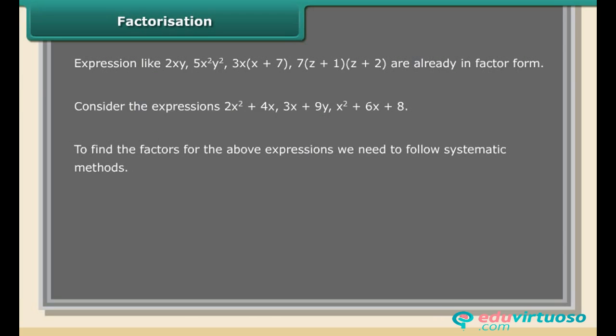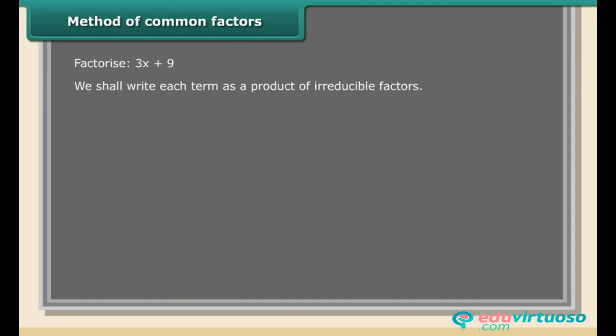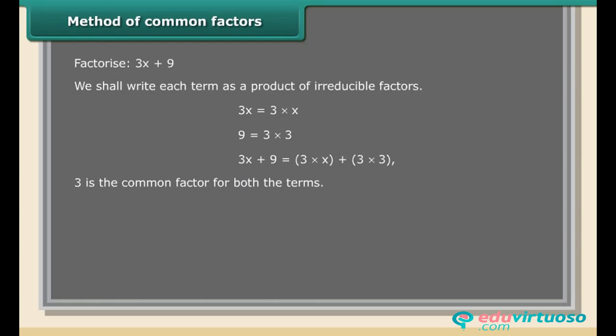To find the factors for expressions such as 2x² + 4x, 3x + 9y, and x² + 6x + 8, we need to follow systematic methods. Method of common factors: factorize 3x + 9. We write each term as a product of irreducible factors: 3x = 3 × x, and 9 = 3 × 3. So 3x + 9 = 3 × x + 3 × 3, where 3 is the common factor for both terms.